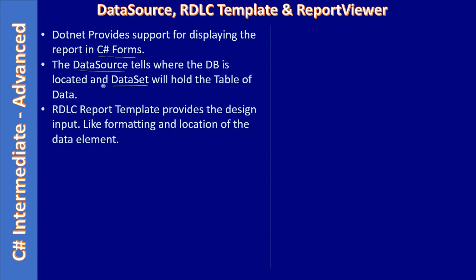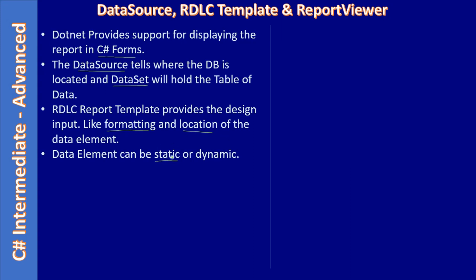The RDLC report template provides the design input — it tells where each data field goes on the paper, whether a field will be on the left side, right side, or middle of the report. You handle both formatting and location, which are the two major elements when designing the report. Data elements can be static or dynamic — if you place a label or text control, you can fix the data at design time, such as a report title.